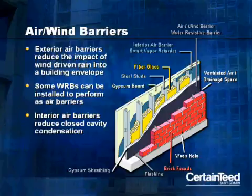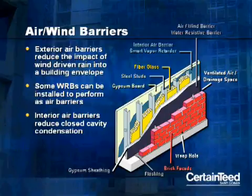Exterior air and wind barriers not only slow air movement through the assembly, but they also reduce the impact of wind-driven rain. Some WRBs can be installed to perform as air barriers as well. Interior air barriers can also be utilized to reduce condensation in closed cavities.